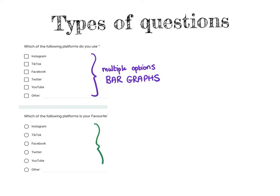The next question, however, is a forced choice where each person will only pick one. From this you can construct a pie chart saying that, for example, 30% of people prefer Facebook, 80% prefer Instagram, or 10% prefer TikTok — because if you add all the data together it will give you the amount of people that was surveyed. That's different to the first one where people can pick multiple options, which cannot be shown in a pie chart but rather in a bar graph.